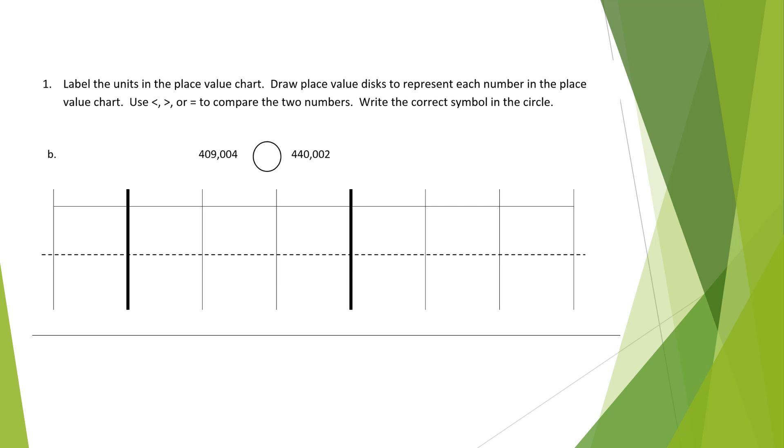Today we're going to be comparing numbers using our place value chart. This problem asks us to label the units in the place value chart and draw place value disks to represent each number in the place value chart. We're going to use a less than, greater than, or equal sign to compare the two numbers and write the correct symbol in the circle.